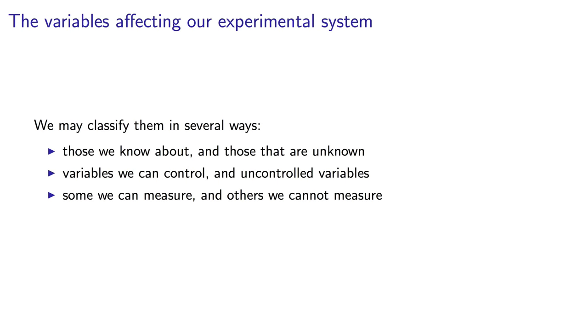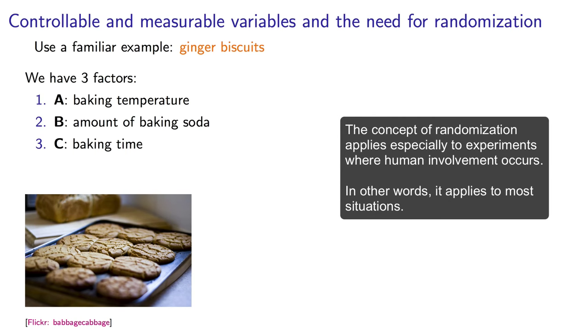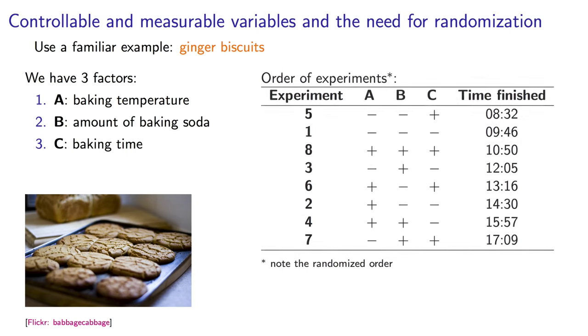I'm going to walk through an example to show what I mean by controllable and measurable factors. Once you understand that terminology, you will see why randomization is so crucial. Imagine we're baking ginger biscuits and I'm investigating that with eight experiments because I have three factors. I decide I'm going to do all these experiments in one day.